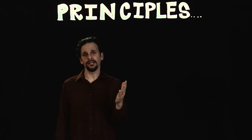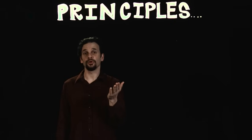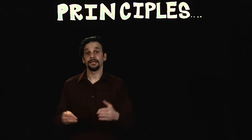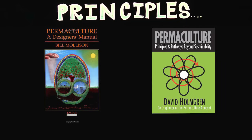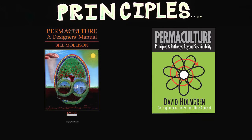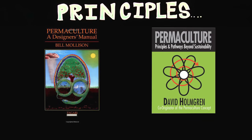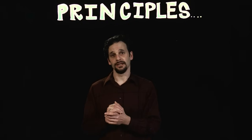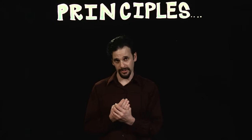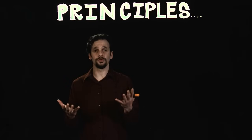We've arrived at the final element of the Permaculture Decision-Making Matrix: the Permaculture Design Principles. Here are my two favorite books, which are the source of the principles. Bill Mollison included a comprehensive list of principles in the Permaculture Designer's Manual, and later David Holmgren consolidated and repackaged the principles into 12 in his book, Permaculture Principles and Pathways Beyond Sustainability. For simplicity's sake, I'll present Holmgren's 12 principles.